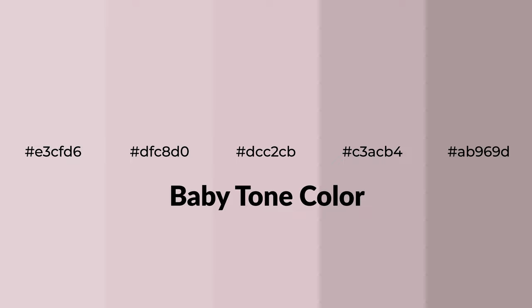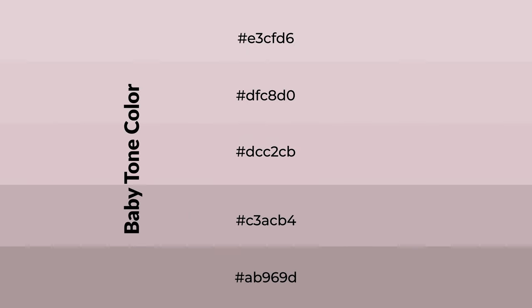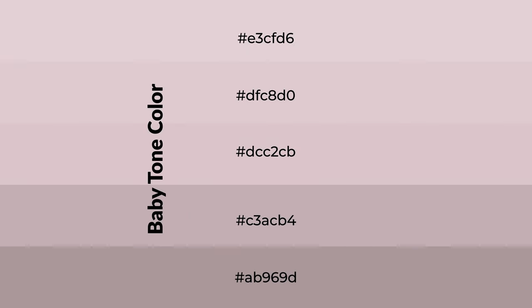Warm shades of baby tone color with violet hue for your next project. To generate tints of a color, we add white to the color. Tints create light and exquisite emotions. To generate shades of a color, we add black to the color. Shades are used in patterns, 3D effects, and layers, and they create depth and drama.